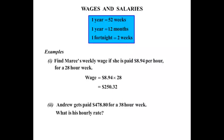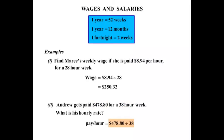The second question: Andrew gets paid $478.80 for a 38-hour week. What is his hourly rate? The hourly rate simply means how much pay is he getting per hour. So if he's getting $478.80 for the week and he's working 38 hours, we divide: $478.80 divided by 38, and he gets $12.60 per hour.